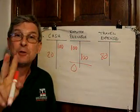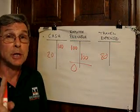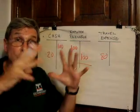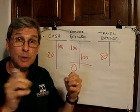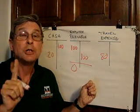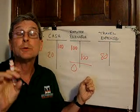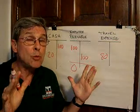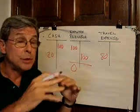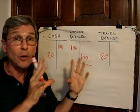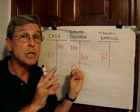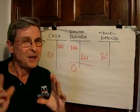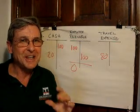Two takeaways for this lesson. Number one, remember that all of the data within your general ledger is always expressed in terms of debits and credits. And remember also that at every moment in time within the general ledger, the total of all your debits is always equal to the total of all your credits.